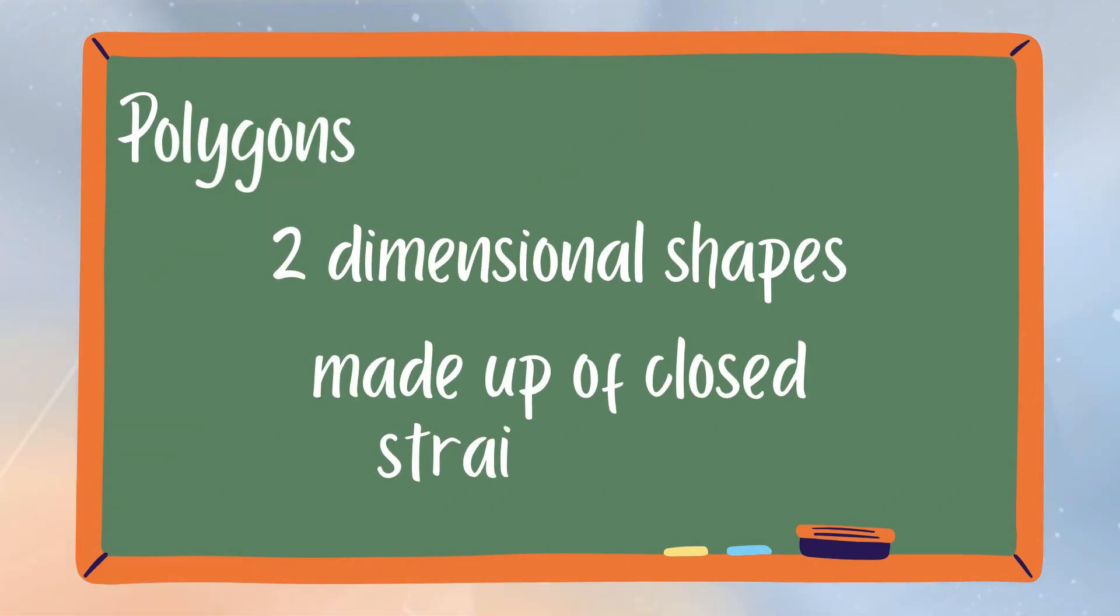Polygons are considered as two-dimensional shapes. They are made up of straight lines and the shape is closed that shows that all lines are connected.